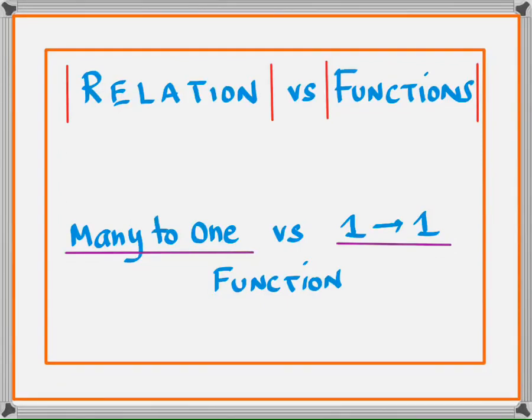Hello everyone. We are starting with a basic review of the concept of functions. The very first question that arises is whether a certain graph is that of a relation or really a function. From the perspective of a layman, as long as the person sees two variables linked together — whether it's a straight line, a quadratic, or a cubic — they would think it is simply a function, but that's not how mathematicians think.